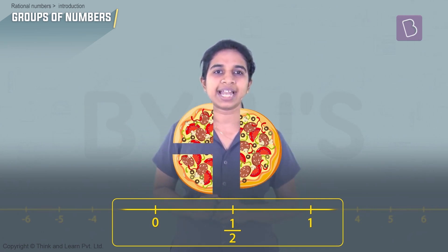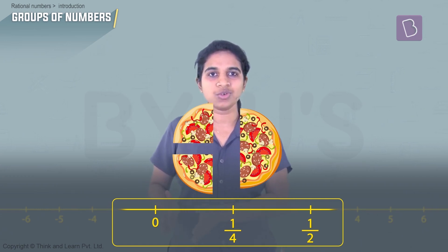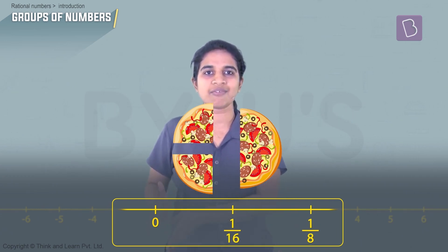We can divide this one unit into two halves, so between zero and one there is a point which is the half. If we take this half, we can further divide it into two quarters. Between this half there is a point which is the quarter. Similarly, this quarter has a point at one-eighth, then one-sixteenth, and so on — we can keep slicing into smaller and smaller pieces, dividing the number line further.